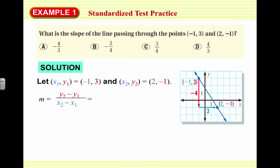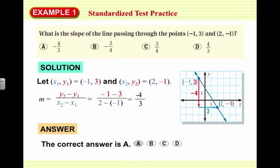Now we'll use our formula. Slope m equals y2 minus y1 over x2 minus x1. Making the appropriate substitutions: negative 1 minus 3 over 2 minus negative 1. Negative 1 minus 3 is negative 4; 2 minus negative 1 is 2 plus 1, which is 3. So the slope is negative 4 thirds, which is answer choice A.